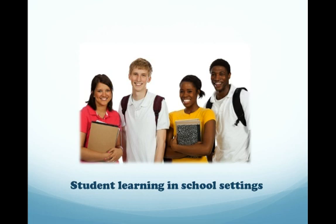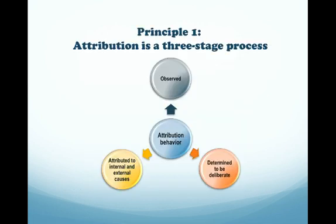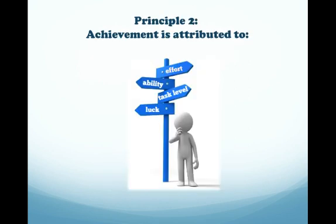The principles of Weiner's attribution theory are threefold, where attribution is a three-step process where behavior is observed, determined to be deliberate, and attributed to internal or external causes. Achievement is attributed to effort, ability, level of task difficulty, or luck.